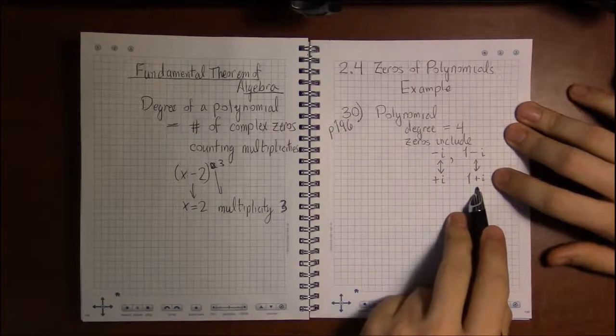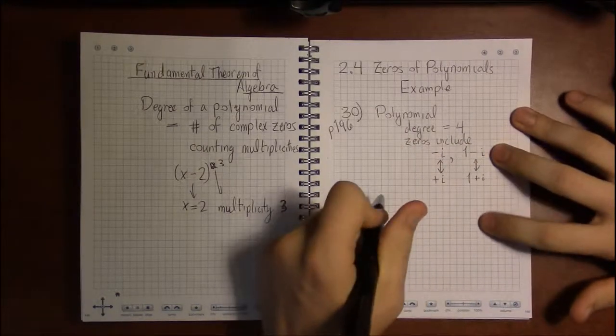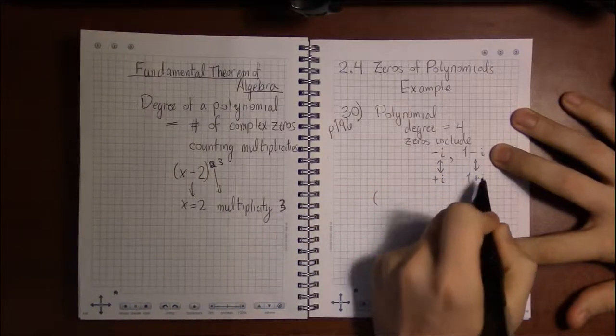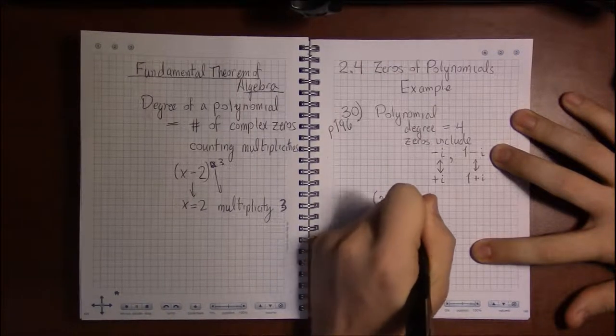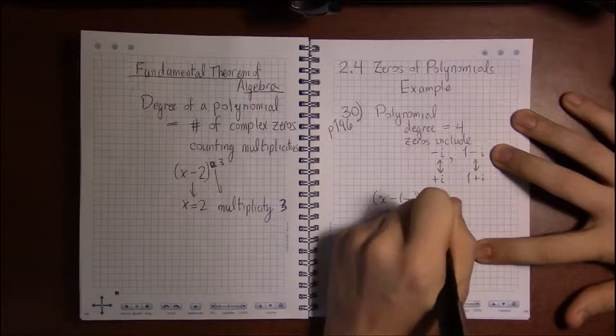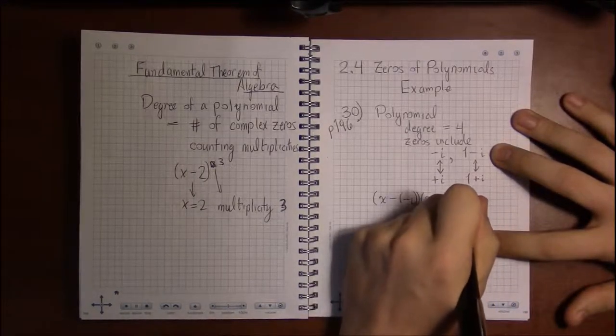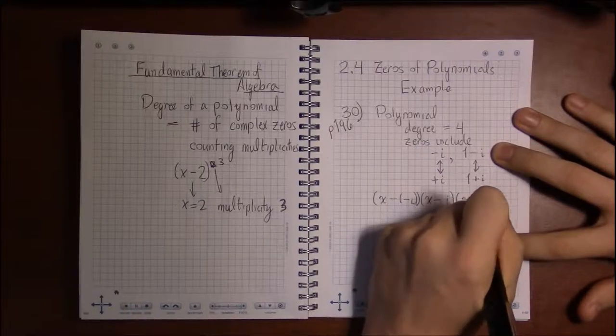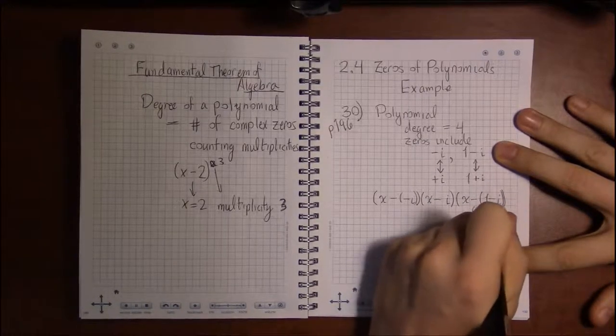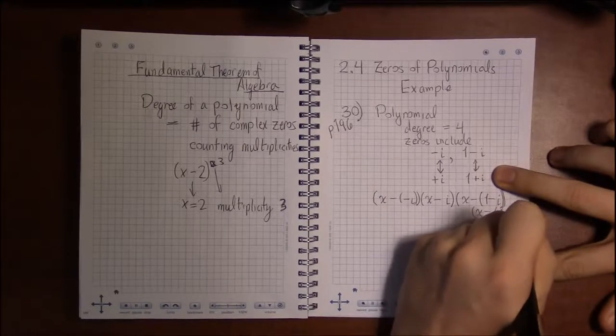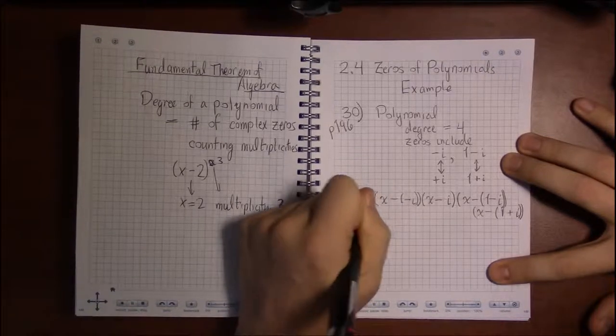So we have four zeros that's going to get us a degree four polynomial, which is what we want. Now we just write out the factors corresponding to each root: x minus minus i times x minus plus i, which is just x minus i times x plus i, then x minus parentheses one minus i times x minus parentheses one plus i. This polynomial is good enough.